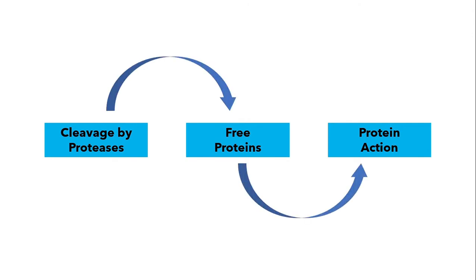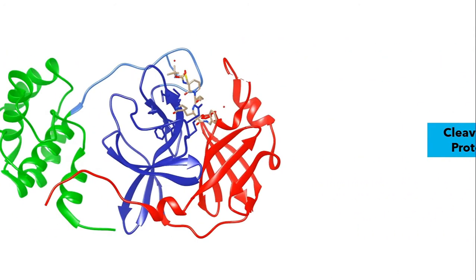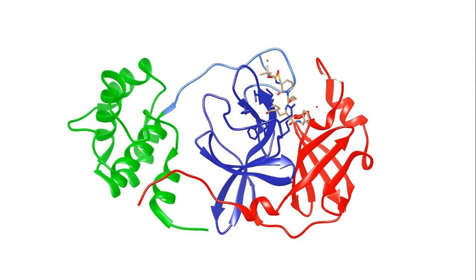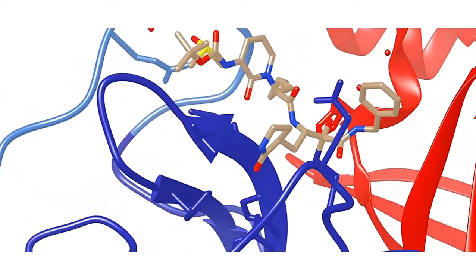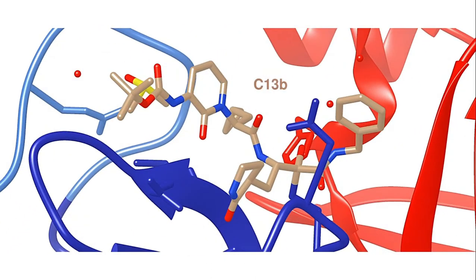Preventing this cleavage can be equivalent to stopping the virus in its tracks. You can see here how an inhibitor, C13B, binds to the active site of the main protease, doing exactly that.